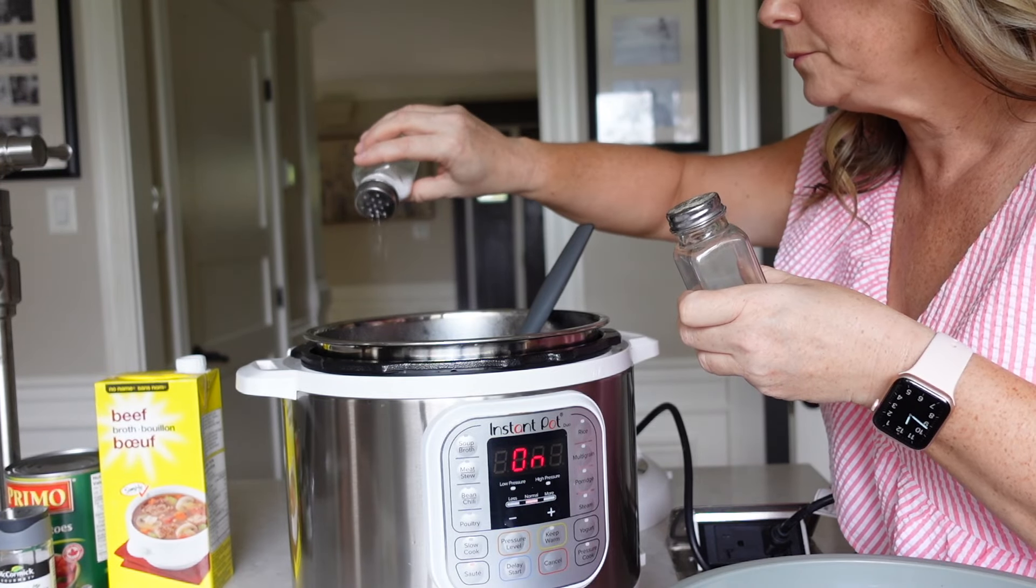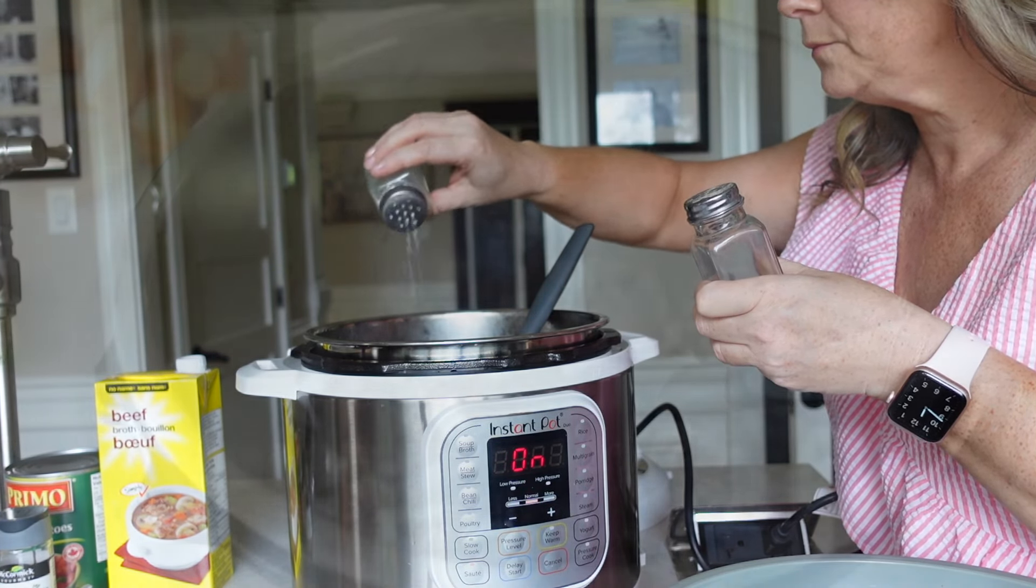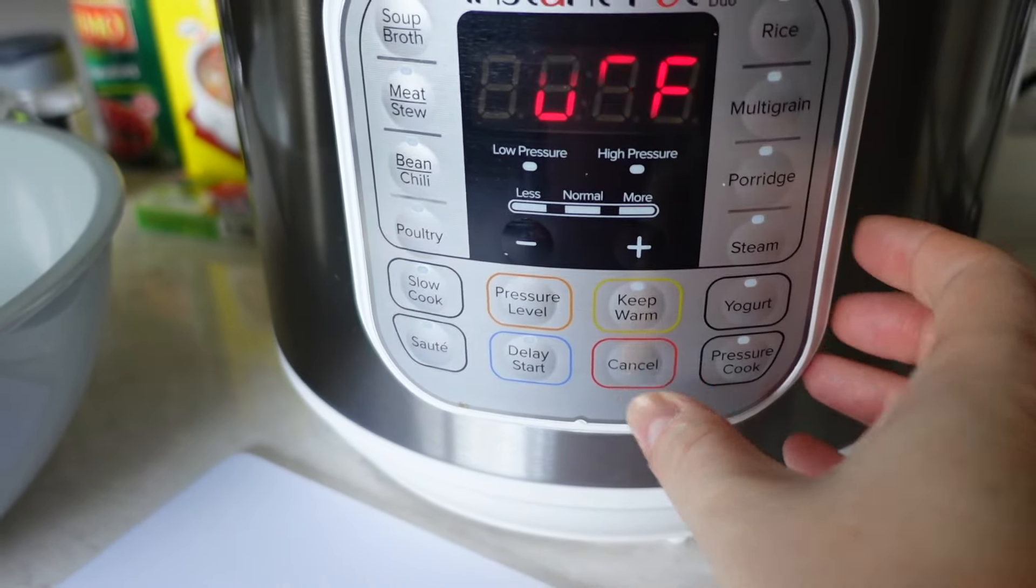Next I season it with a little bit of salt and pepper and once the ground beef is totally cooked I turn the instant pot off and just let it sit.